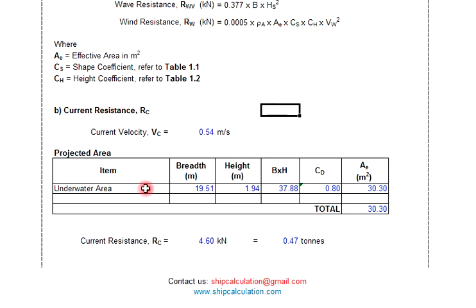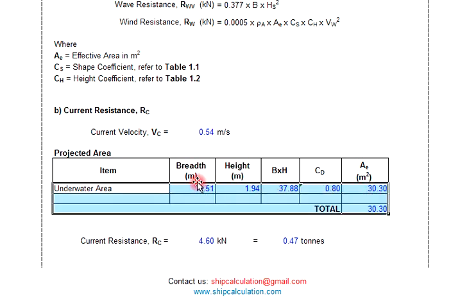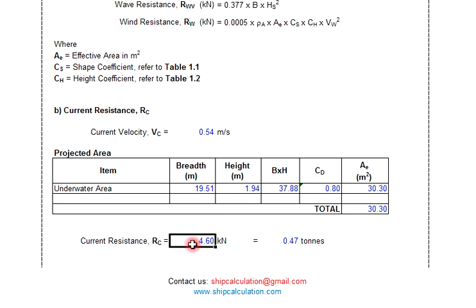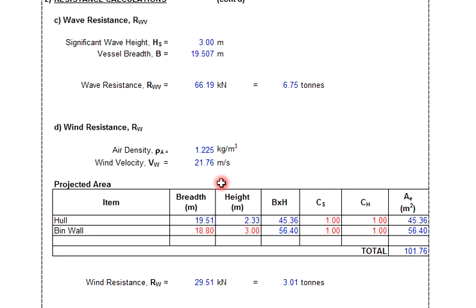For the current resistance, you have to check the underwater area — that is, how much area is below the waterline. You need to check the beam and then determine the underwater area. The current resistance result is 4.60 kilonewtons, which is equal to 0.47 tons.